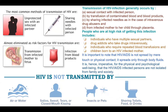HIV is transmitted through four main ways: unprotected sexual contact with an infected person; sharing needles with an infected person, as in the case of intravenous drug abuse; transmission from an infected mother to the fetus; and blood transfusion using contaminated blood or blood products. The first two are the most common means of HIV spread.